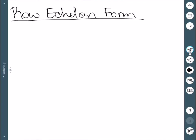So row echelon form is a type of form that we can put a matrix in using row operations. And there are three conditions.